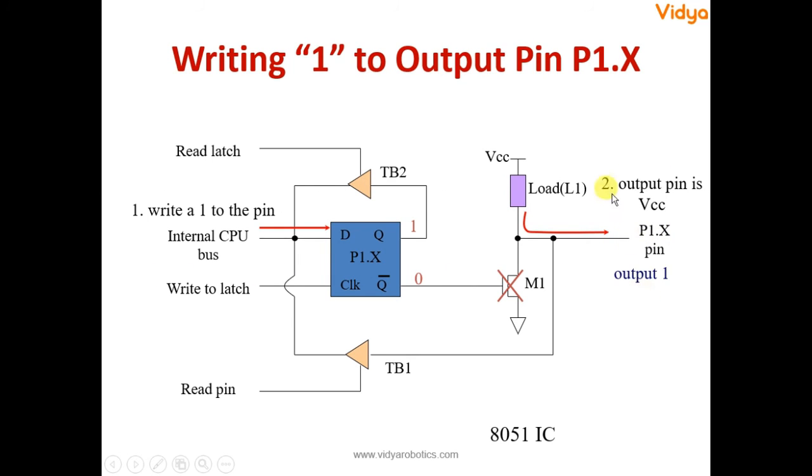At the same time, now when we write down 0 to the pin, see what happens. Whenever we write down 0, the D in latch input gets 0 and ultimately Q will become 0 and Q bar will become 1. Because Q bar is 1 now, the transistor will be conducting.